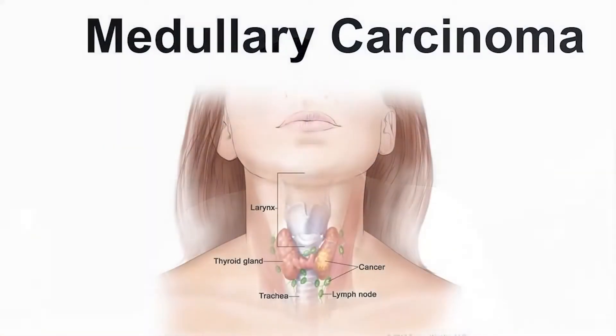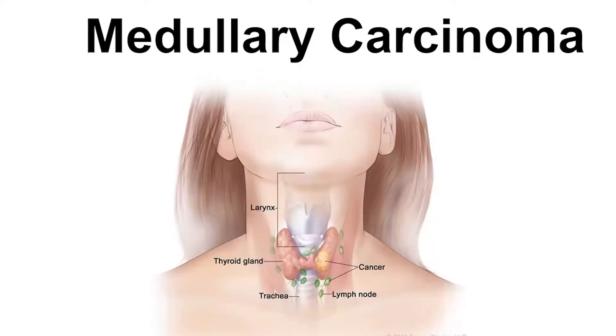Medullary thyroid carcinoma and anaplastic carcinoma are relatively rare. Medullary thyroid carcinoma is usually genetic and can be diagnosed at a young age using calcitonin and CEA blood tests. Treatment is complete surgery. On follow-up with calcitonin and CEA blood tests, iodine is not used — only surgery. If there is recurrence, surgery or chemotherapy can be done.